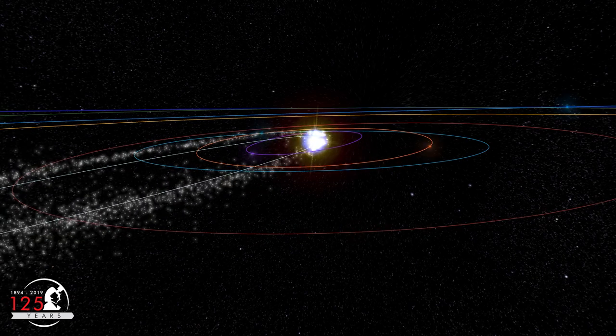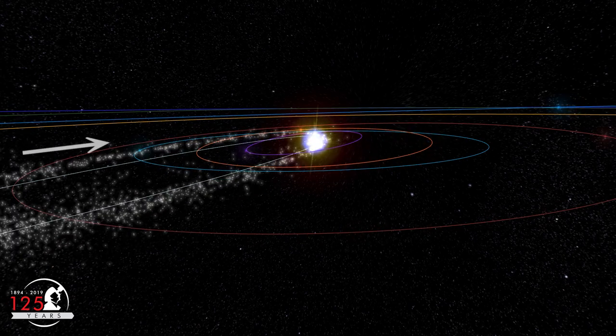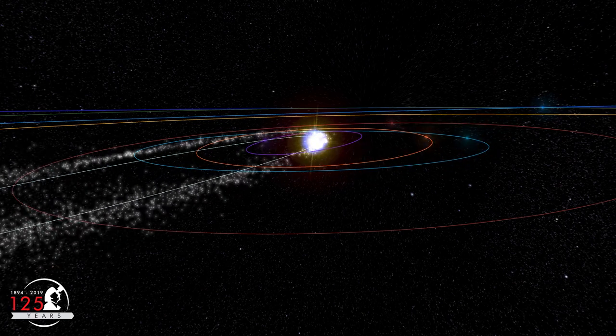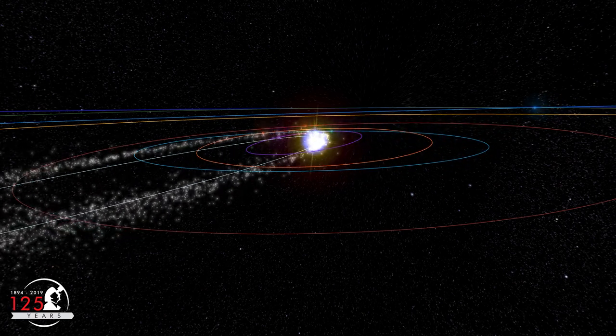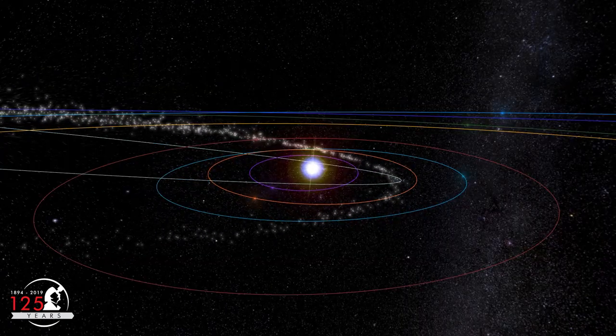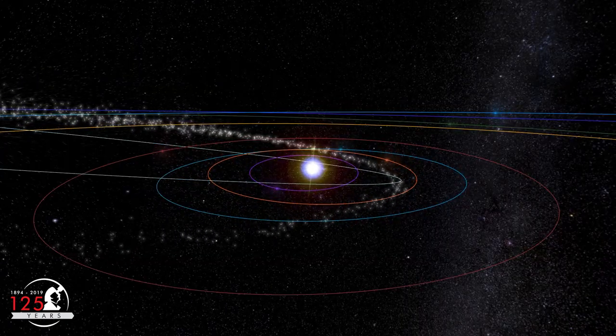The Southern Delta Aquariid meteoroids approach Earth from below the plane of our solar system. This meteor shower usually produces about 10 to 20 faint meteors per hour. The Alpha Capricornid meteor shower produces only 5 or so meteors per hour.